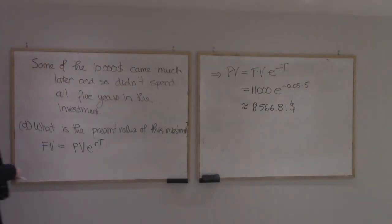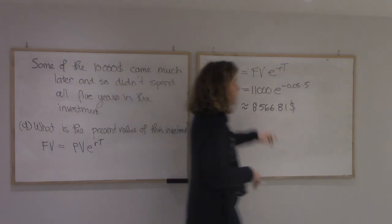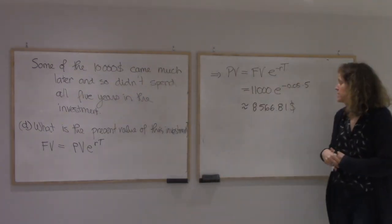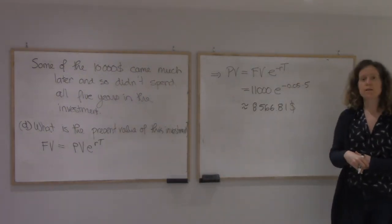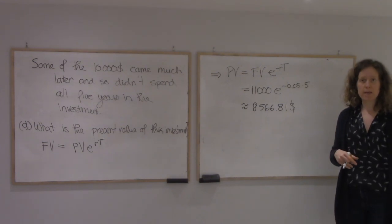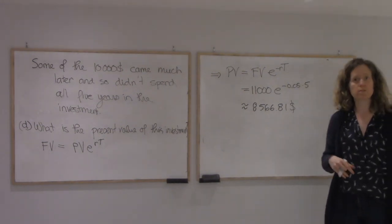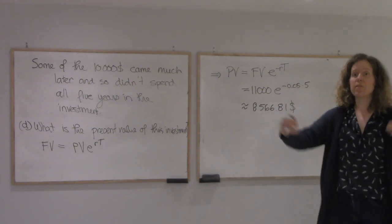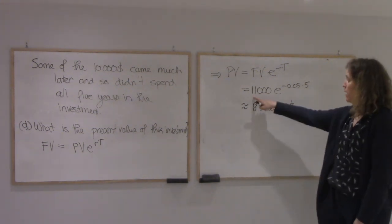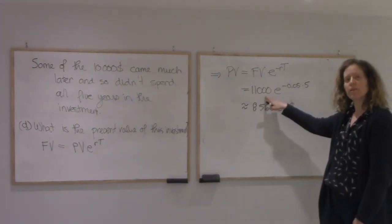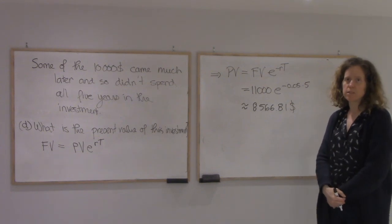So if at time zero I put $8,566.81 in the bank account, in a bank account with interest of 5%, at the end of my five years I would end up with exactly the same amount, $11,000, as the company did.